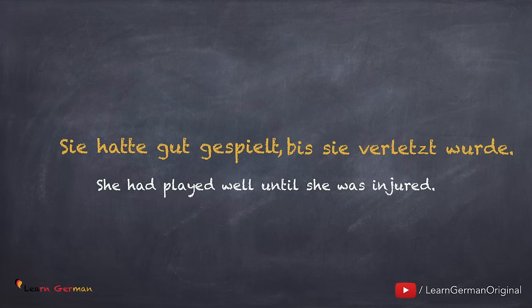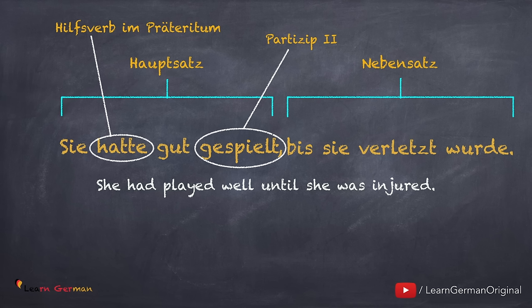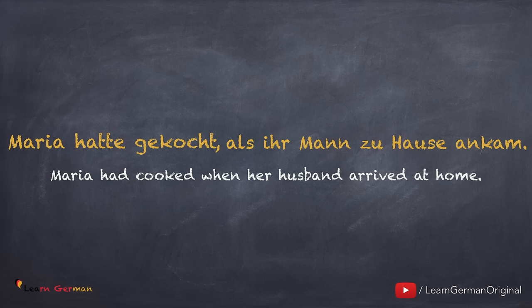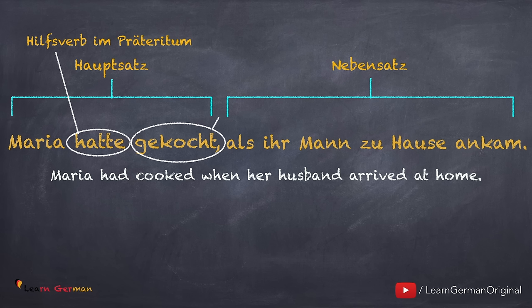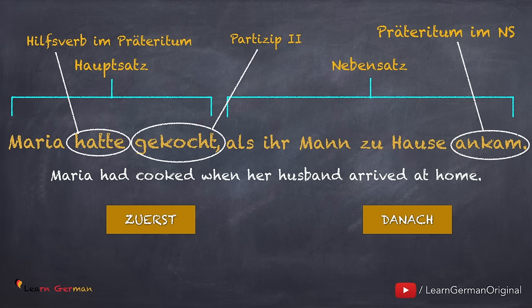Hier ist das zweite Beispiel: Sie hatte gut gespielt, bis sie verletzt wurde. Hier gibt es auch einen Hauptsatz und einen Nebensatz. Das Plusquamperfekt ist im Hauptsatz und im Nebensatz ist das Verb im Präteritum. Der Hauptsatz findet vor dem Nebensatz statt, deshalb steht das Verb hier im Plusquamperfekt. Maria hatte gekocht, als ihr Mann zu Hause ankam. Was passiert zuerst? Maria hatte gekocht — und danach kam ihr Mann nach Hause an. Hier sieht man auch eine Vorzeitigkeit. Der Hauptsatz wird im Plusquamperfekt ausgedrückt und der Nebensatz im Präteritum, weil das Ereignis im Hauptsatz zuerst passiert.